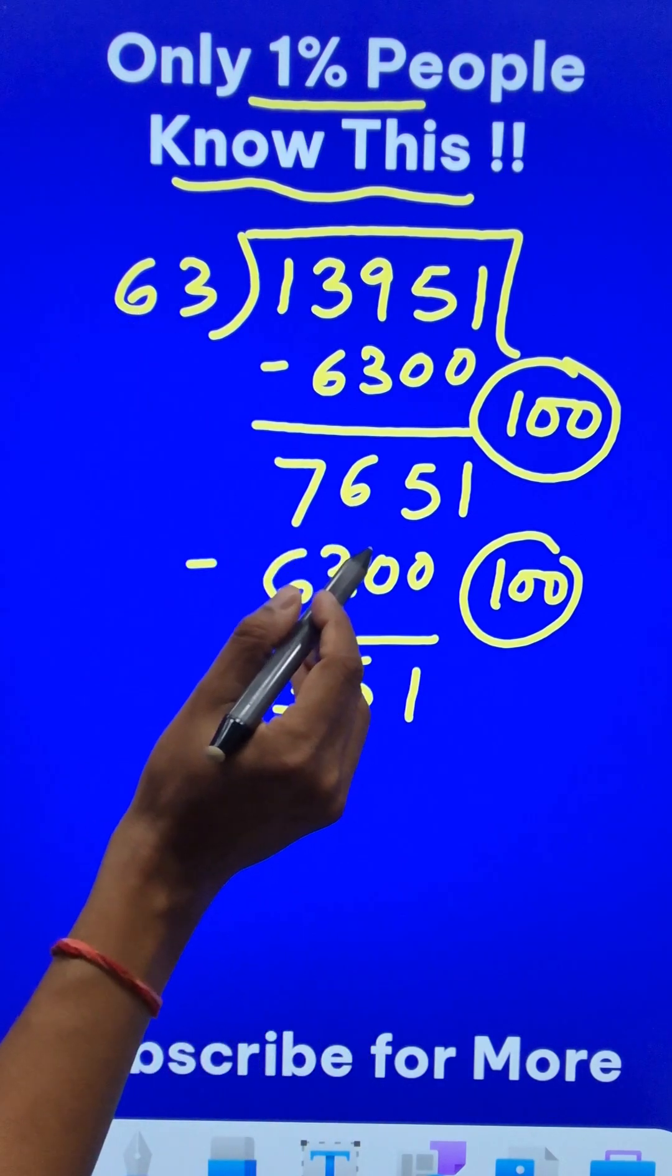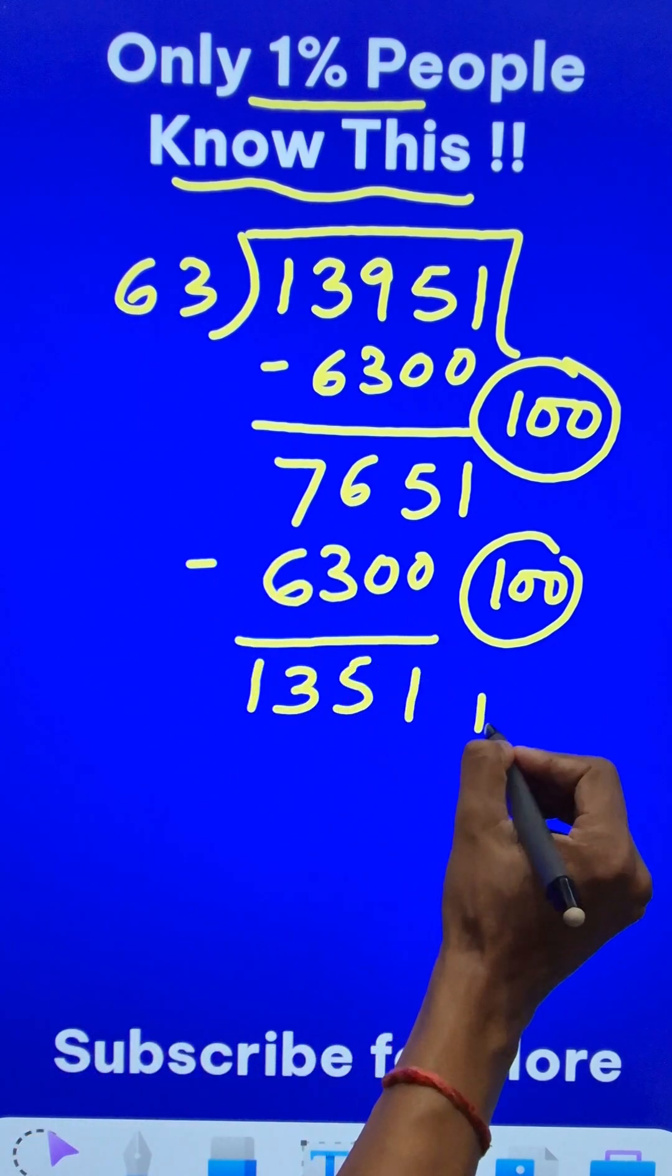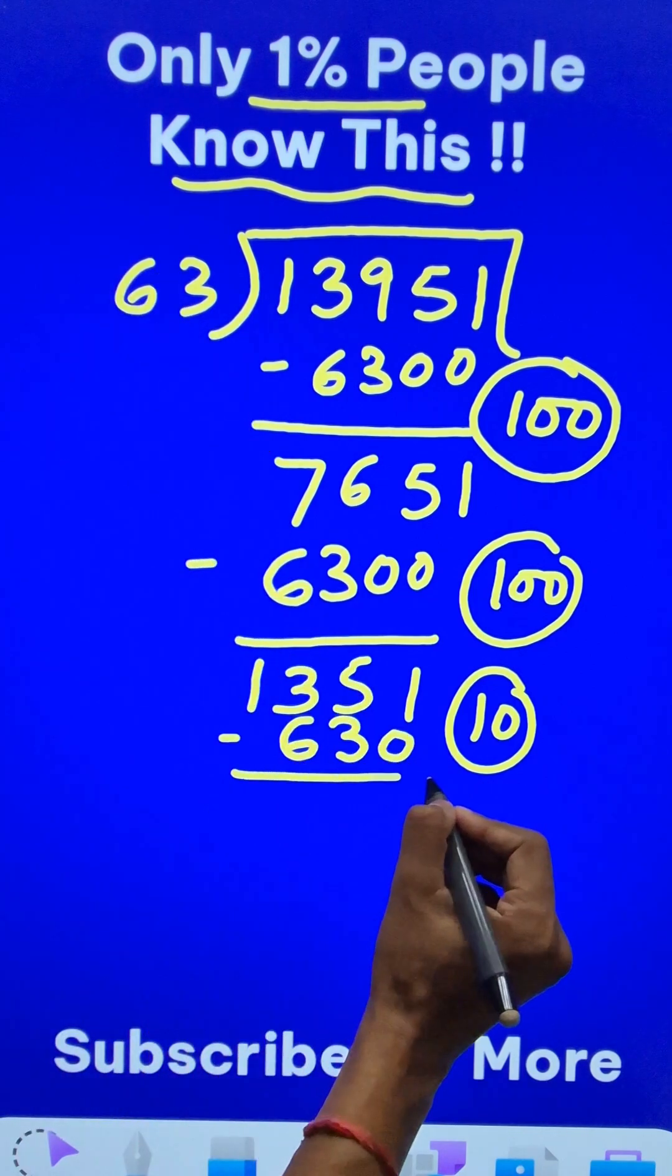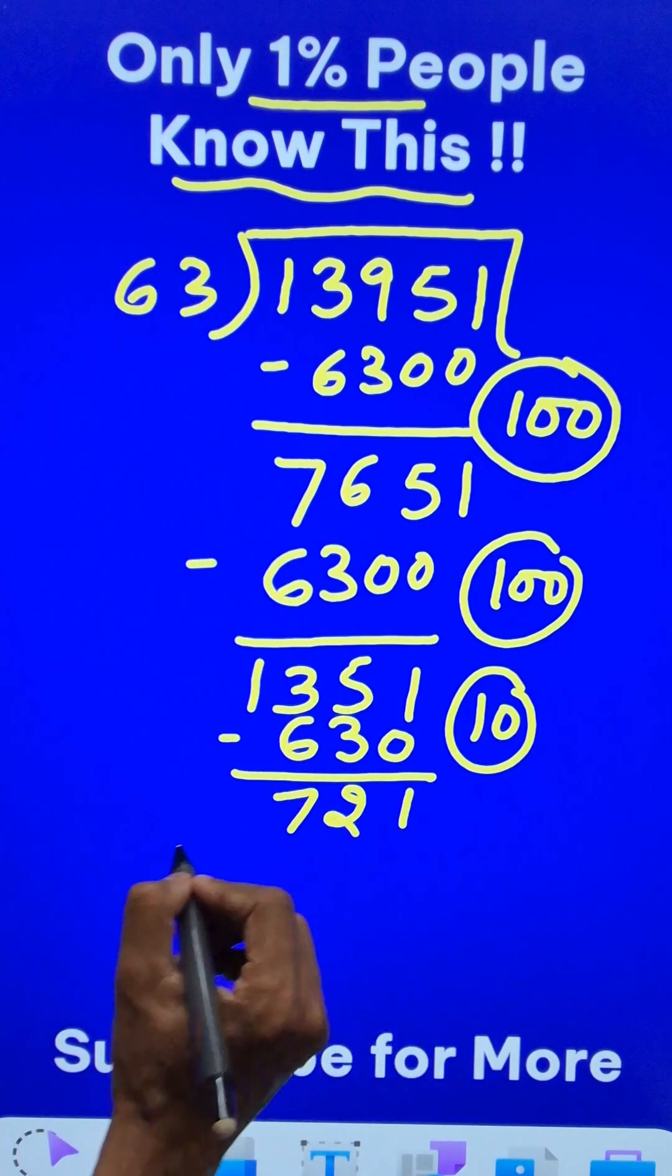Now, it doesn't go 100 times, but it definitely goes 10 times. So, if I do 10 times 63, it is 630. When I subtract it, I get 721.